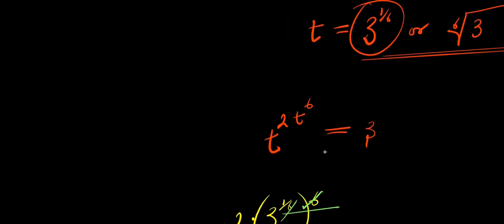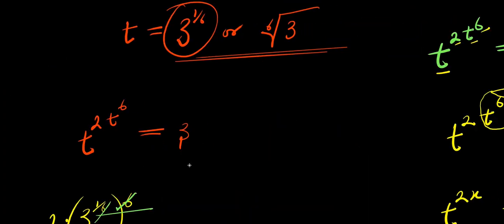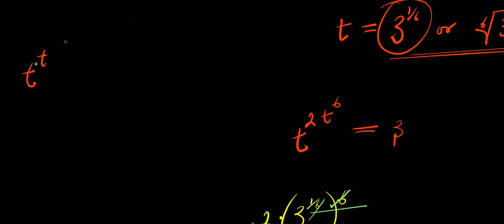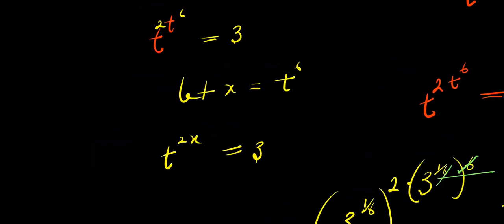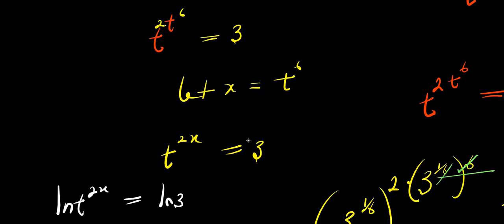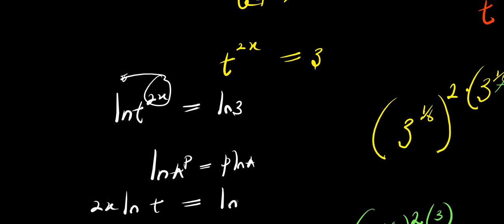I feel you can also solve this using natural log. The question is t to the power of two times t to the power of six equals three. Let x equal t to the power of six, that means you have t to the power of two x equals three. Let's apply natural log: natural log of t to the power of two x equals natural log of three. Using the log property — natural log of a to the power of b equals b times natural log of a — this gives two x times natural log of t equals natural log of three.